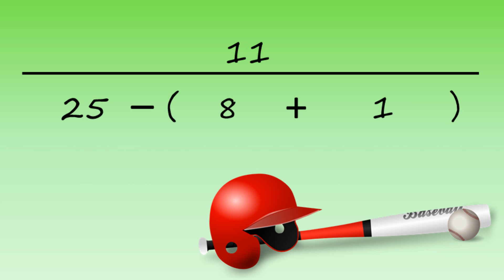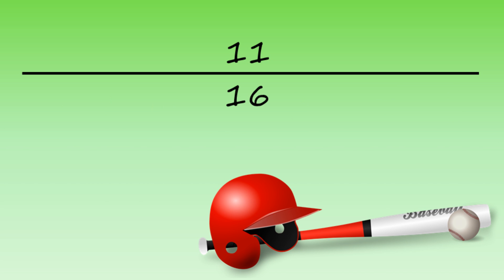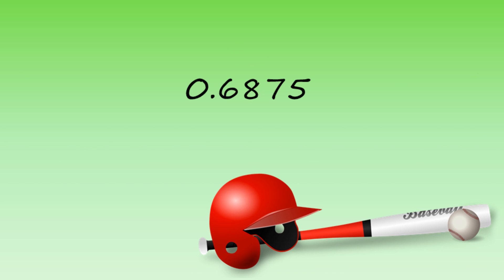So let's work out the equation. 8 plus 1 equals 9. 25 minus 9 equals 16. Now it's fine to use a calculator — 11 divided by 16 equals 0.6875.